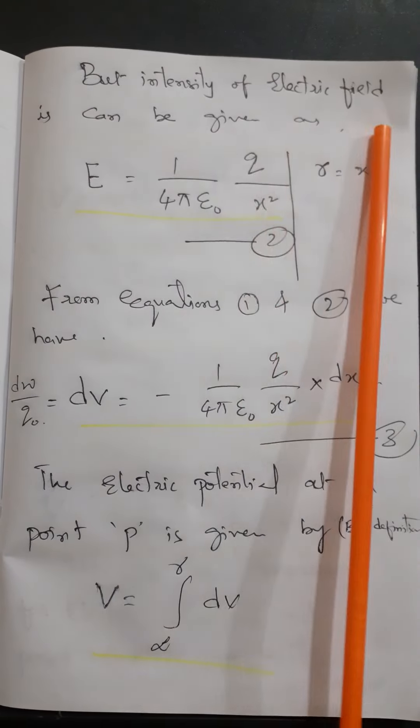So the potential at point P due to the plus Q charge is given as Q by 4 pi epsilon-naught into 1 by R. This is the expression for electric potential at any point due to a point charge. Thank you — for more videos, subscribe to my channel Physics.